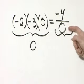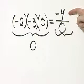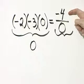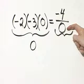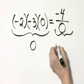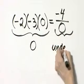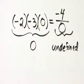If negative 4 divided by 0 is some real number, then it would be true that that real number times 0 must give a product of negative 4. There is no real number that, when multiplied by 0, gives a product of negative 4. So we say that this is undefined. Once again, division by 0 is undefined.